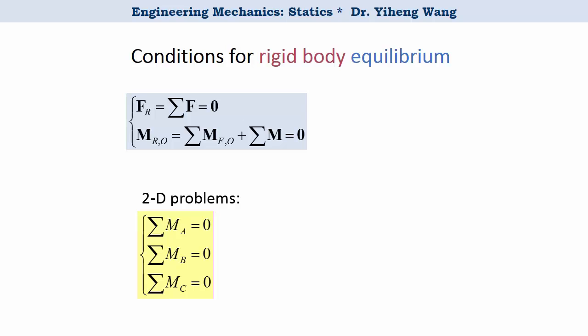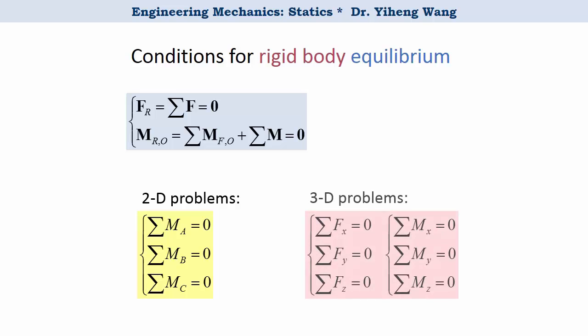For a 3D problem, based on one free body diagram, we can write a maximum of six independent scalar equations and therefore can solve for a maximum of six unknowns. These are the three force equilibrium equations along the x, y and z direction respectively, and the three moment equilibrium equations about the x, y and z axis respectively.